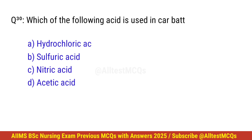Question number 30. Which of the following acid is used in batteries? Correct option is B. Sulphuric acid.